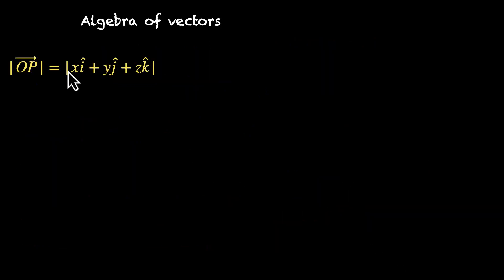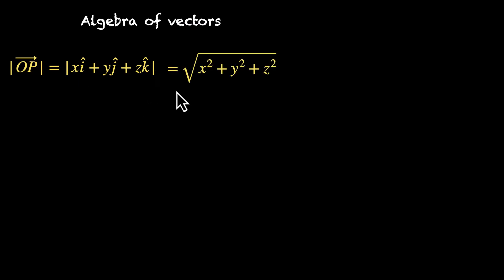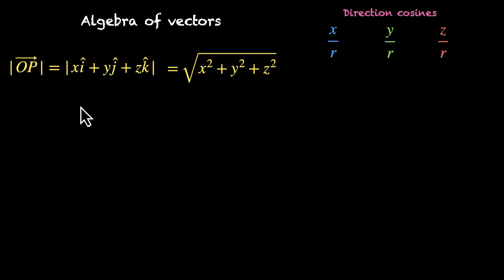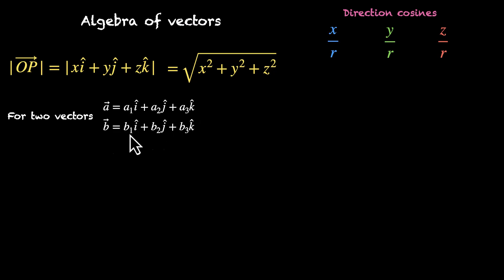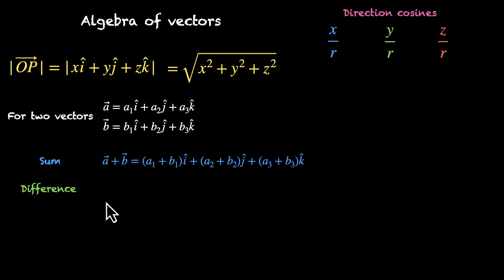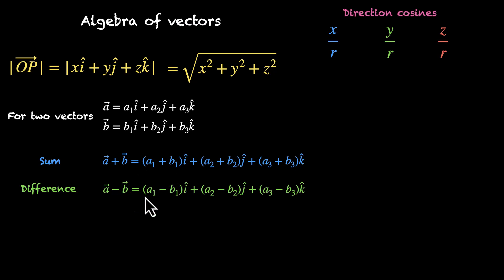To recap: for a point P(x, y, z), the position vector is x i-cap + y j-cap + z k-cap. Its magnitude is √(x² + y² + z²), and the direction cosines are x/R, y/R, and z/R where R is the magnitude. For two vectors a = a1 i + a2 j + a3 k and b = b1 i + b2 j + b3 k, we find their sum by adding corresponding components, and their difference by subtracting them.